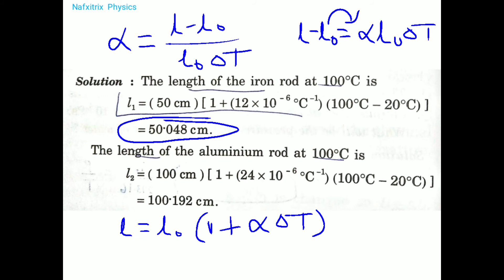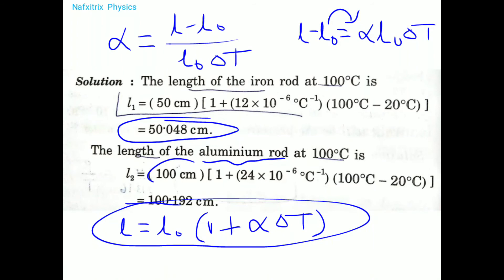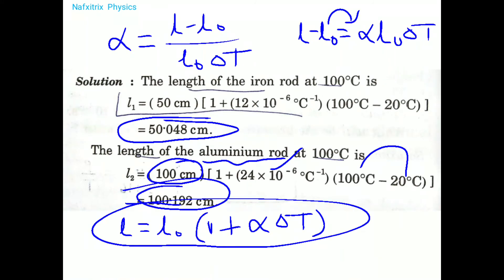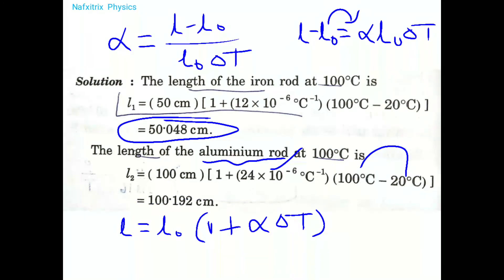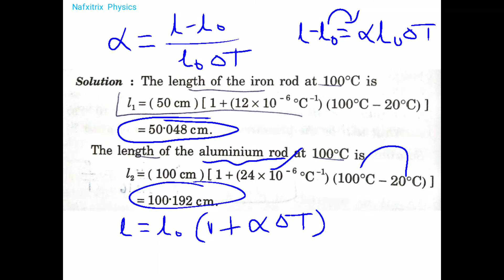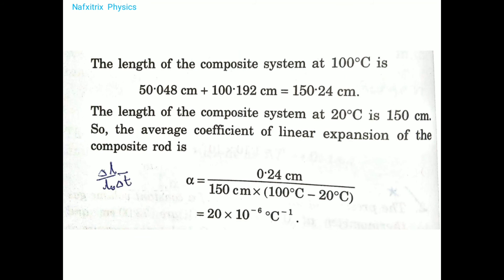Similarly for the aluminium rod: the initial length is 100 centimeters, its coefficient of linear expansion is applied, and the temperature change is again 100 - 20 = 80°C. These give us the individual final lengths of both rods. Now we can find the average coefficient of linear expansion for the composite system.